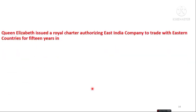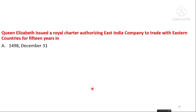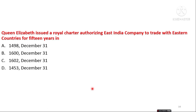The next question is: Queen Elizabeth issued a royal charter authorizing the East India Company to trade with eastern countries for 15 years on which date? The options are 1498 December 31, 1600 December 31, 1602 December 31, and 1453 December 31. The answer is 1600 December 31 — Queen Elizabeth issued the royal charter authorizing the East India Company.